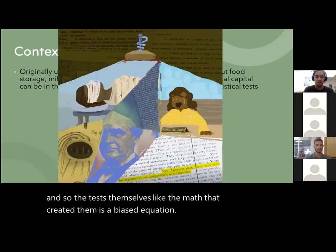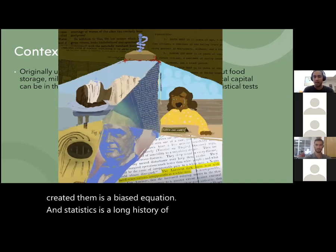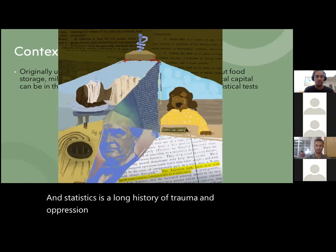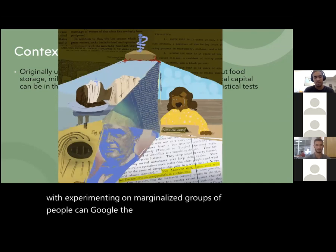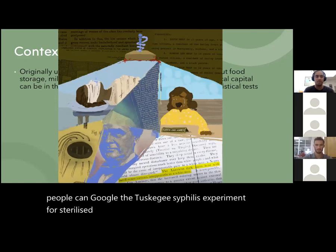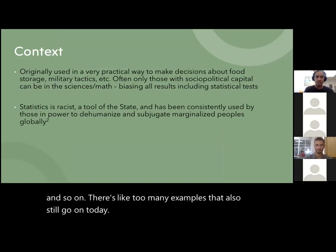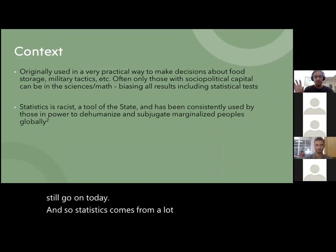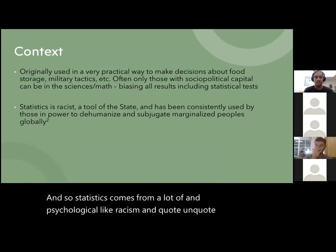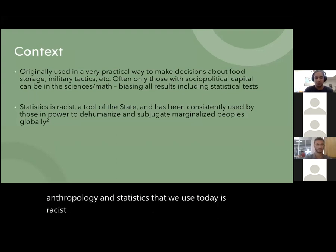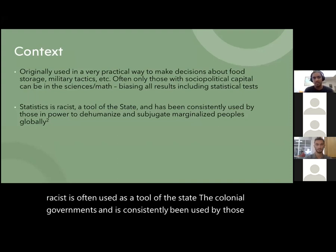Statistics has a long history of trauma and oppression. In the US and across the world there has been experimentation on marginalized groups — you can Google the Tuskegee syphilis experiment, sterilizations of Native women, the eugenics movement. Statistics comes from a lot of medical and psychological racism, and the statistics we use today is often used as a tool of the state, the colonial government, and has consistently been used by those in power to dehumanize and subjugate people globally.